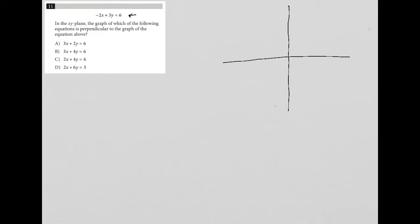Well, I know that for perpendicular graphs, you basically have two lines with opposite reciprocal slopes, right?